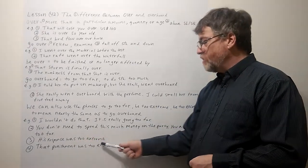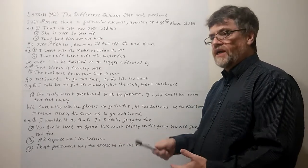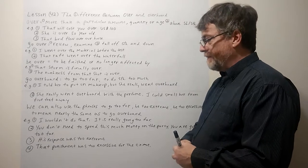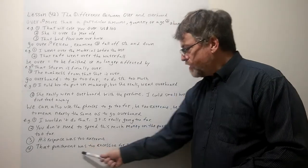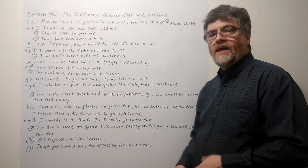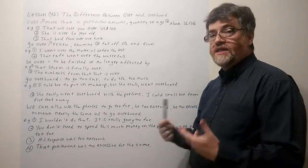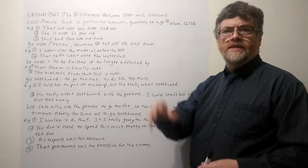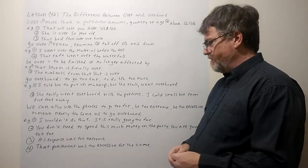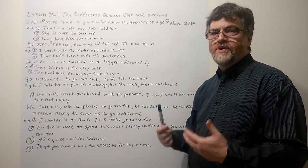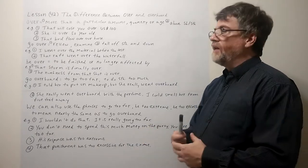Number three. His response was too extreme. Well this is another way of saying too far or overboard. And number four. We could say that punishment was too excessive for the crime. Yeah, maybe a judge gave a very serious punishment. Sometimes we say to throw the book at somebody. I mean you gave them a much harsher punishment than maybe that particular crime deserved.